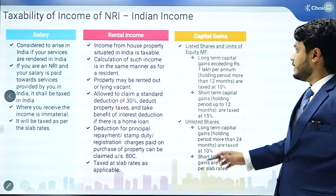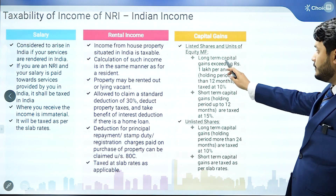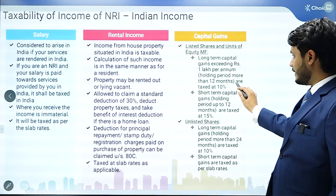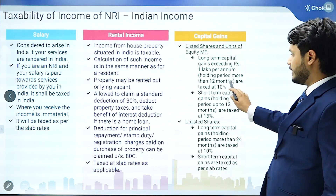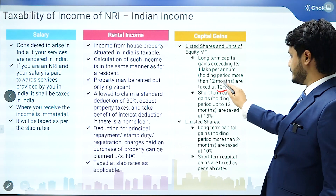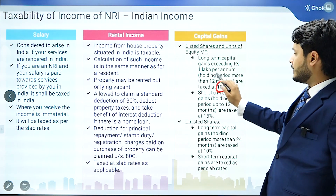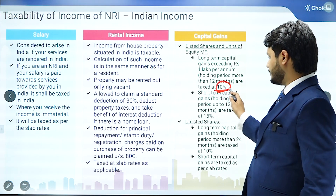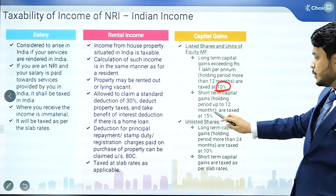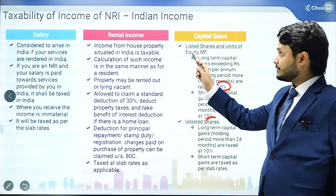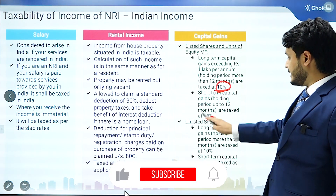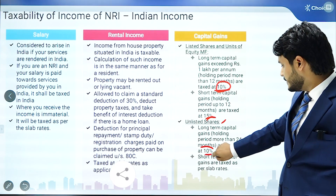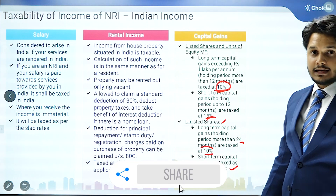For capital gains on listed shares and units of equity mutual funds, long-term capital gains up to 1 lakh rupees are nil; more than 1 lakh rupees where the holding period is more than 12 months, the tax rate is 10 percent. Short-term capital gains are taxed at 15 percent for NRIs. For unlisted shares, long-term capital gains where the holding period is more than 24 months are taxed at 10 percent, and short-term capital gains are taxed at slab rates.